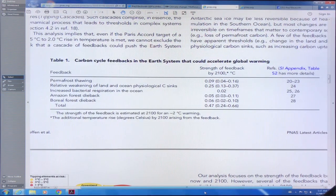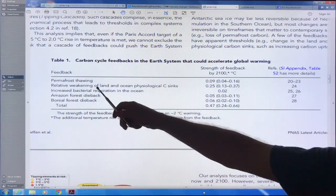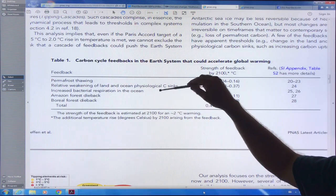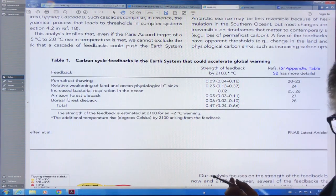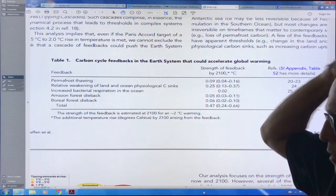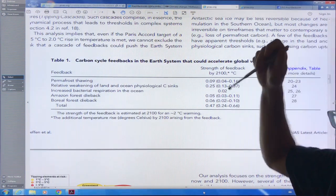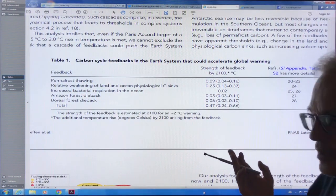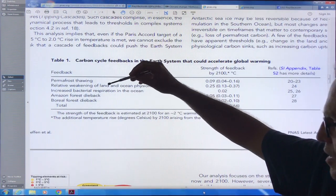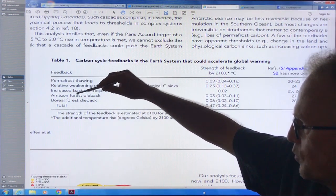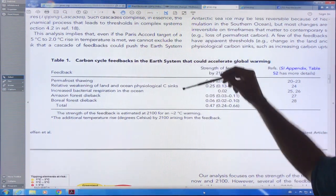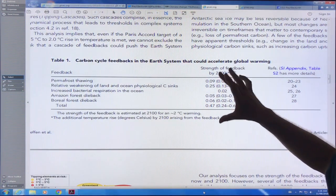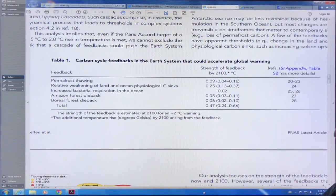These are some of the feedbacks that accelerate the warming: permafrost thawing, weakening of the land and ocean carbon sinks. The oceans are warmer, they can't absorb as much carbon. The oceans are more stratified, there's less phytoplankton, less carbon sink. The land - the boreal forests start burning, that carbon goes up into the atmosphere. Those trees aren't left to absorb carbon, or grasslands. And there's other things: Amazon forest dieback, boreal forest dieback, increased bacterial respiration in the ocean. There's a number of different feedbacks. This is just some of the carbon cycle ones.